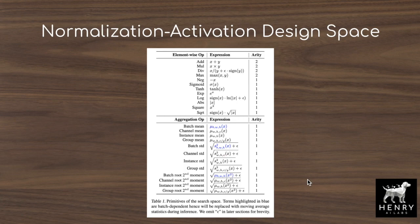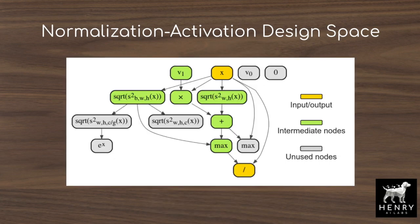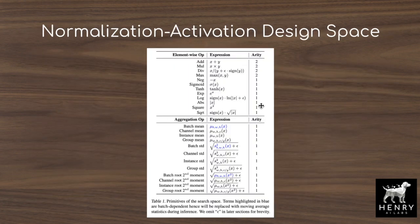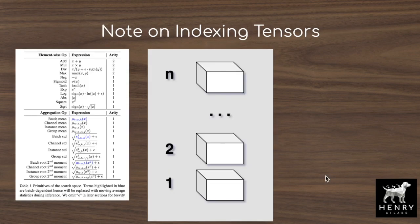This table shows all the primitive operations the evolutionary search can choose from, with the arity describing the number of inputs. For example, the division function has arity two, while operations like batch mean or channel mean have arity one. These operations index the four-dimensional tensor — batch, width, height, channel — and aggregate statistics along those axes, which is how normalization layers normalize features. This slide clarifies the idea of indexing tensors and aggregating statistics from those indexed axes.